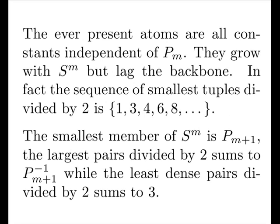The ever-present atoms are all constants independent of our current prime. They are created earlier. They grow with the model, but lag the backbone. In fact, the sequence of the smallest tuples divided by 2 are very small numbers. The smallest member at any iteration is the next prime, and the largest pairs of gaps, divided by 2, sums to our next prime minus 1. While the least dense pairs, divided by 2, sums to 3.